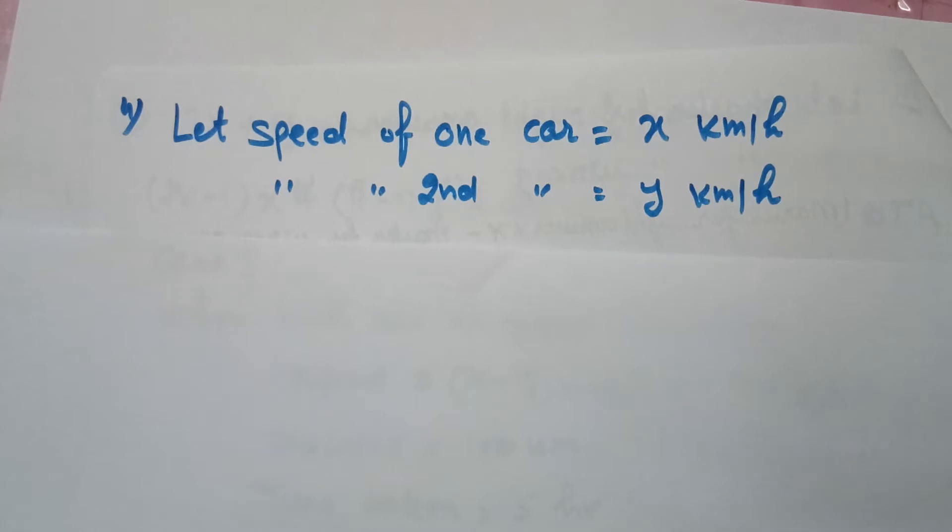If the cars travel in the same direction at different speeds, they meet in 5 hours. If they travel towards each other, they meet in 1 hour. Find the speed of the two cars.